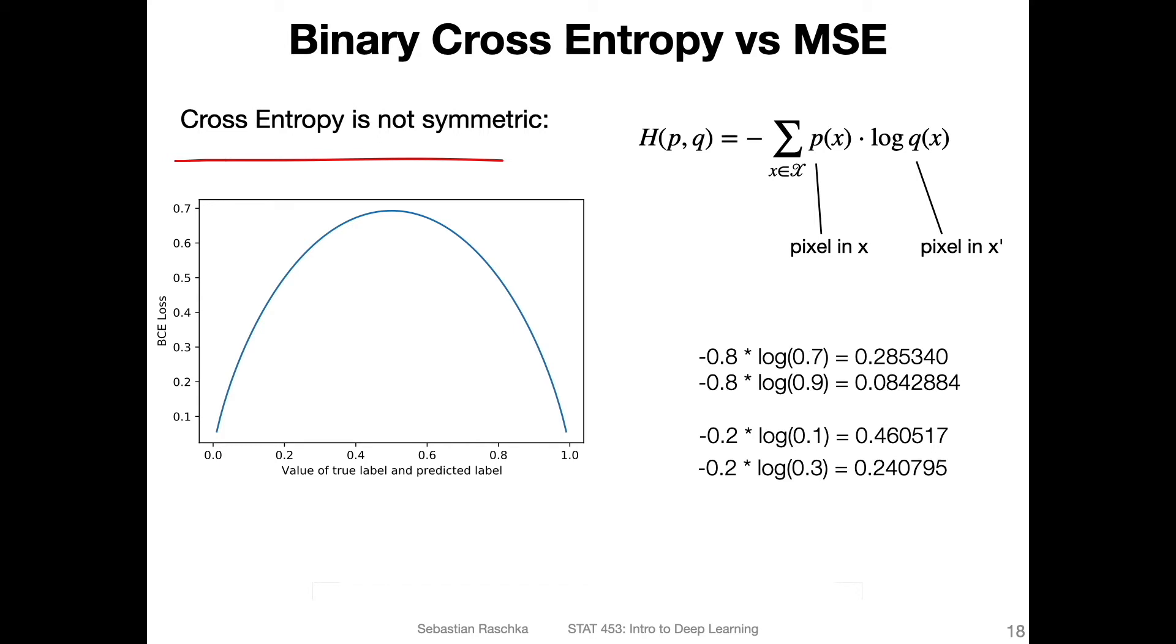What I mean by that: what I'm showing you on the left-hand side is a plot where I plotted the binary cross entropy loss for values of the true and the predicted label. So here, zero is probably a bad example, but let's say point two. Here, what I mean is when we consider the cross entropy, that the true value is point two and the predicted value is point two. So that's how we compute.